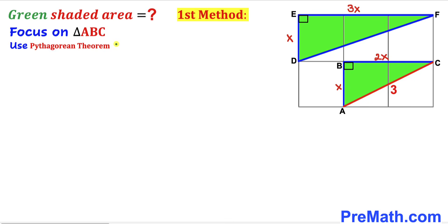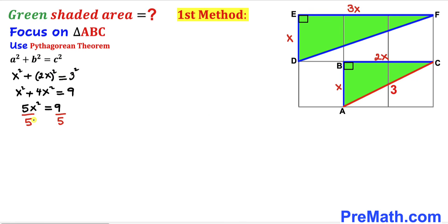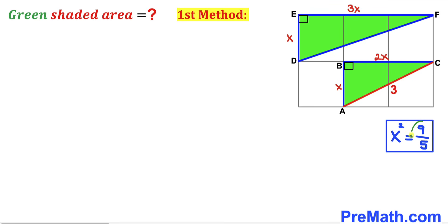Let's focus on right triangle ABC and apply the Pythagorean theorem. The formula is: A squared plus B squared equals C squared. In our case the hypotenuse is 3 units, while the two other legs are x and 2x. Substituting: x² + (2x)² = 3², which gives us 5x² = 9. Dividing both sides by 5, our x² value turns out to be 9 divided by 5.